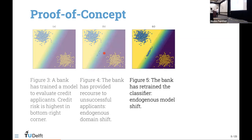Next, we assume the bank retrains the classifier — simply based on the notion that organizations retrain their models regularly in practice. You can see that the decision boundary has shifted in the direction of the non-target class. This is what we refer to as an endogenous model shift.